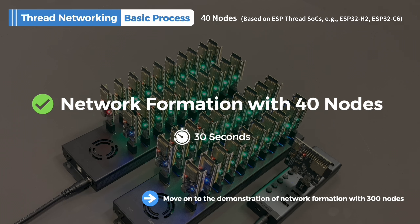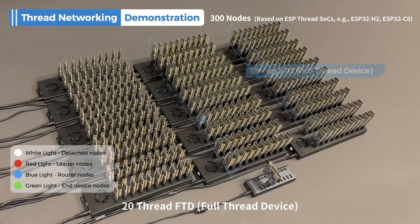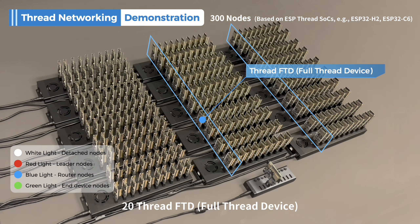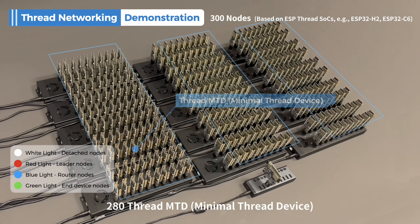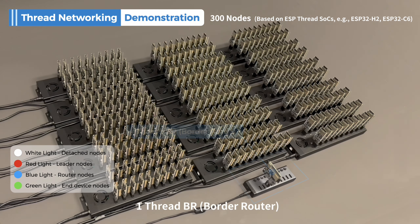Next, let's see the process of network formation with 300 nodes. In these 300 nodes, there are 20 Thread Full Thread Devices, 280 Thread Minimal Thread Devices, and 1 Thread Border Router.